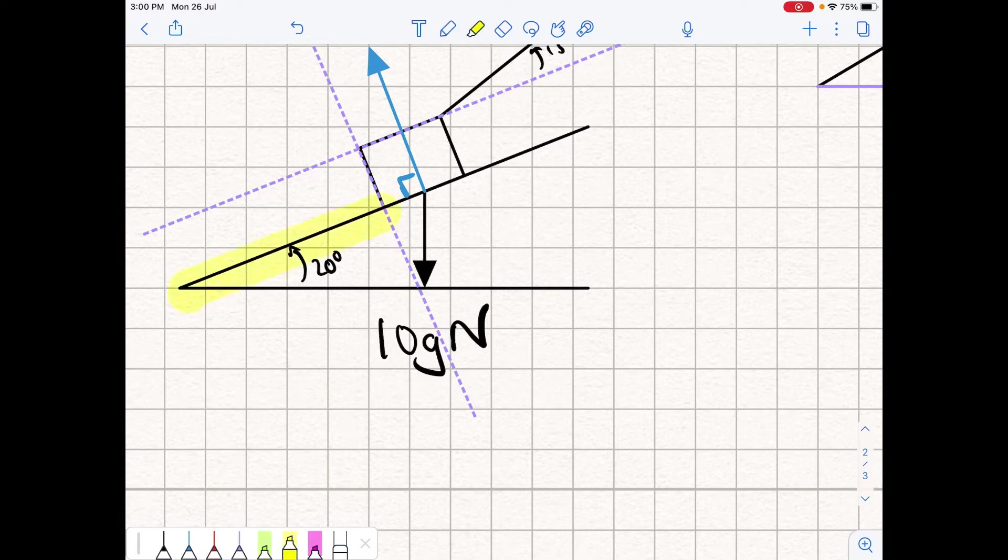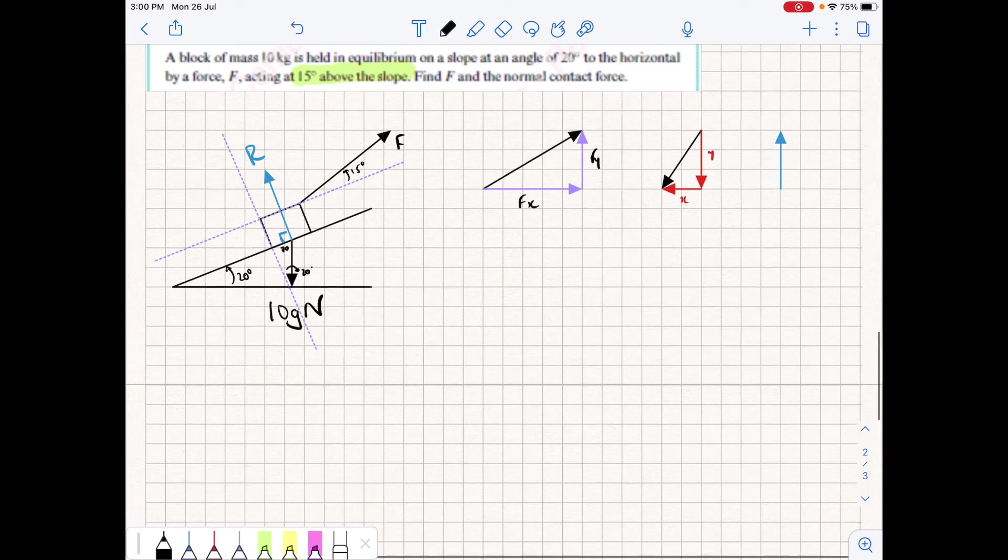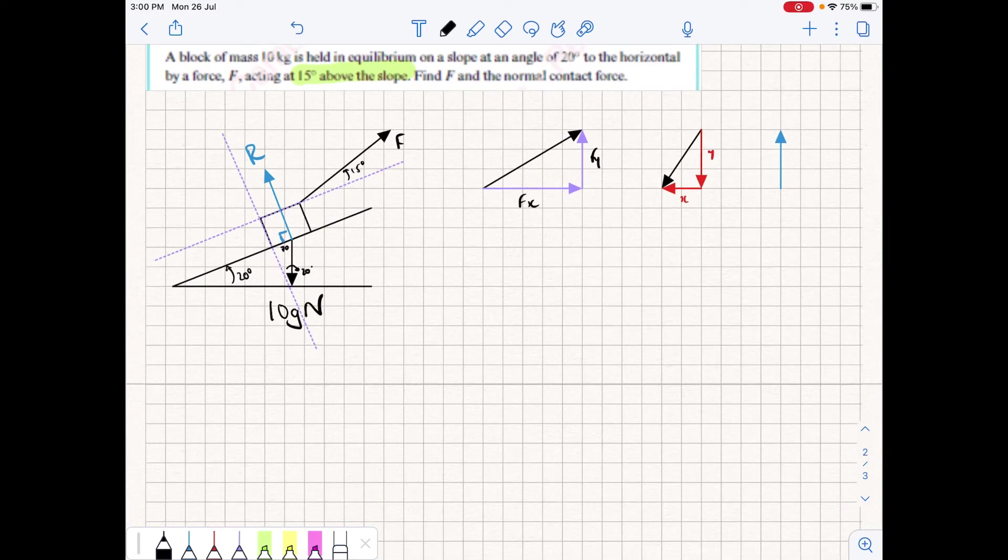First of all, we have this triangle created by the force vector pointing down the angle of the slope, and it's at 90 degrees. Based on that, because it's a triangle, we can work out that this inner angle here is 70 degrees, and then within this smaller triangle over here, we can work out that this angle down at the bottom here is 20 degrees. We have the angle for force F at 15 degrees, that's given in the information.